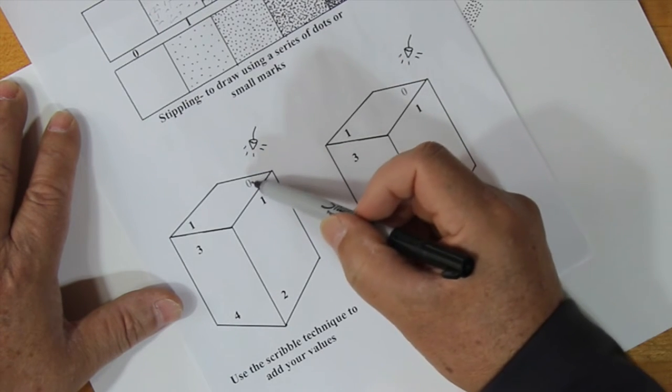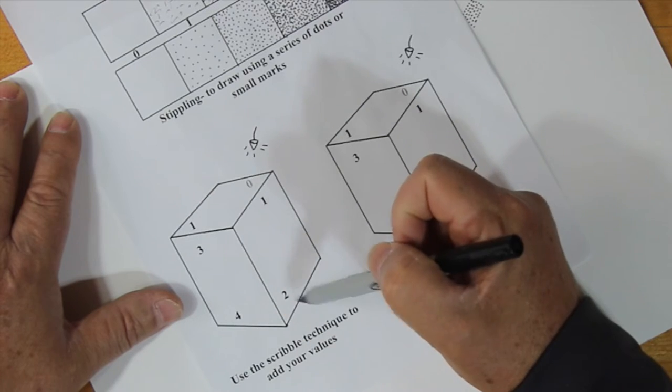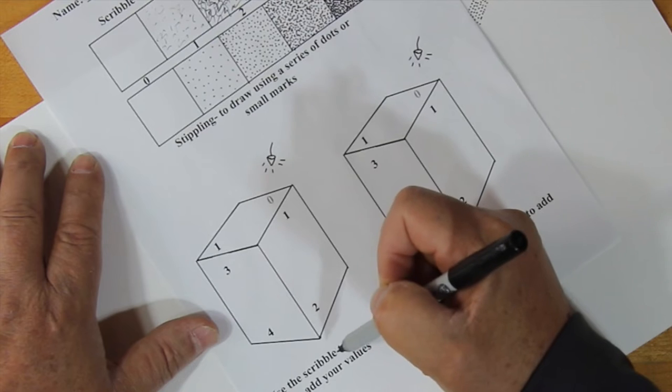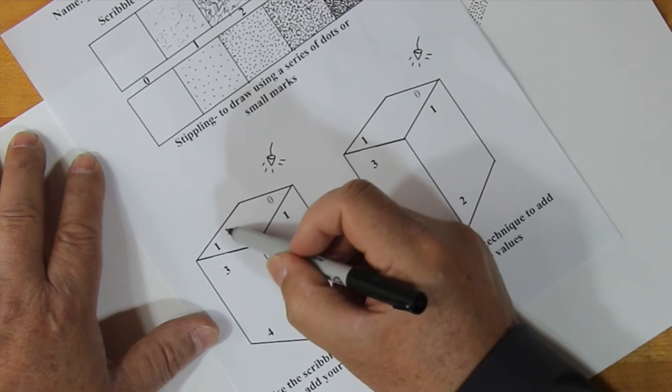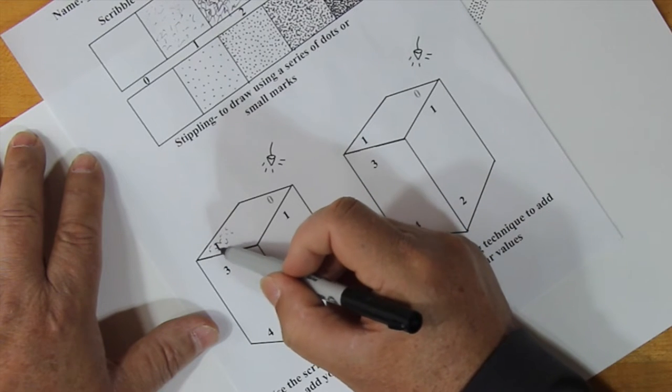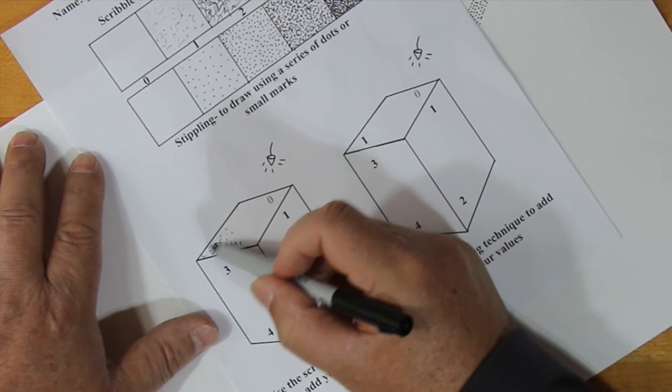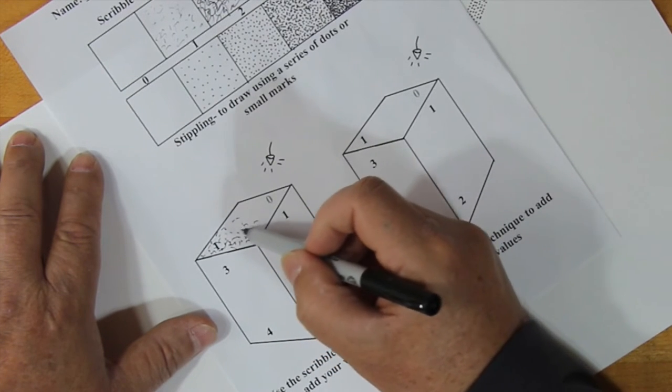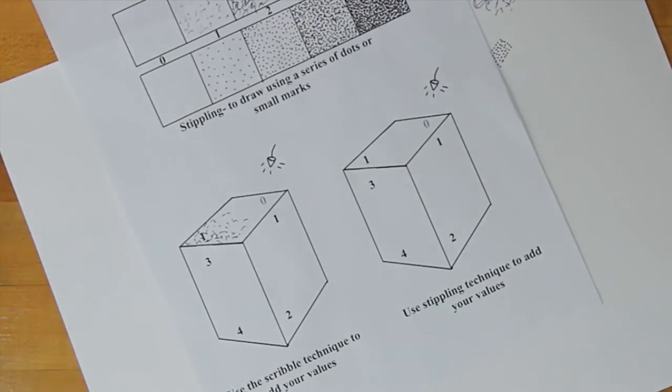The first one, these already have been mapped out for you. So the first one, we've got zero to one, one to two, three to four. So zero, we're going to leave blank, and that's with the scribble. And on this side, we're just going to put just a little bit of scribble. That's it, super easy.